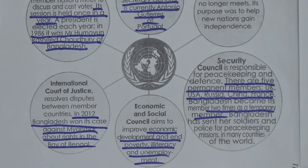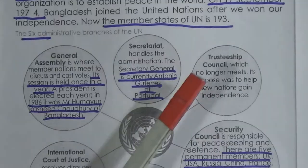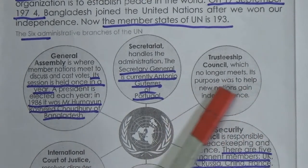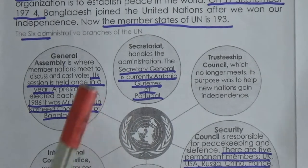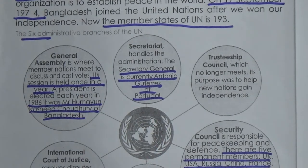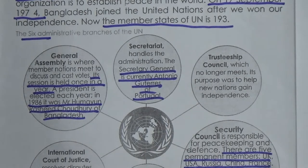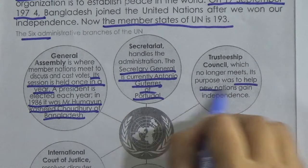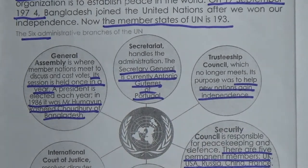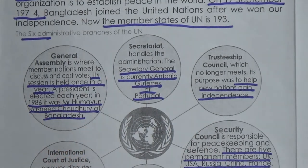The Trusteeship Council's purpose was to help new nations gain independence. However, the Trusteeship Council no longer meets, as its purpose has been fulfilled. So the six administrative branches are: Secretariat, General Assembly, International Court of Justice, Economic and Social Council, Security Council, and Trusteeship Council. All of you should learn about these councils.